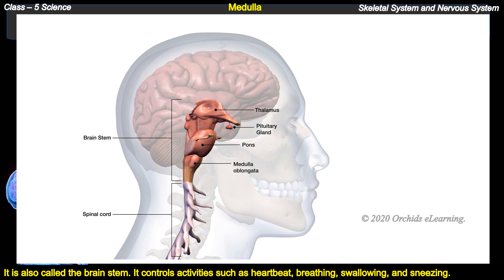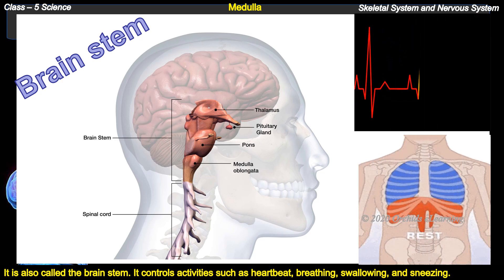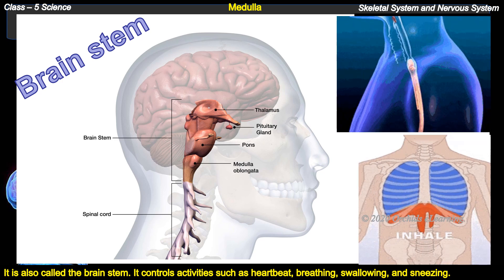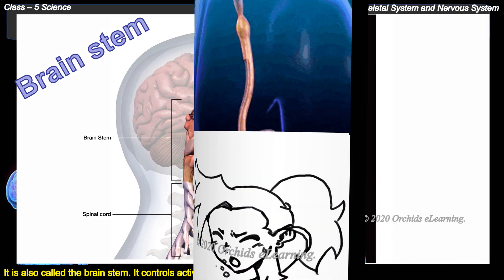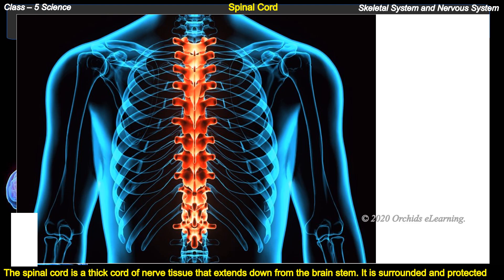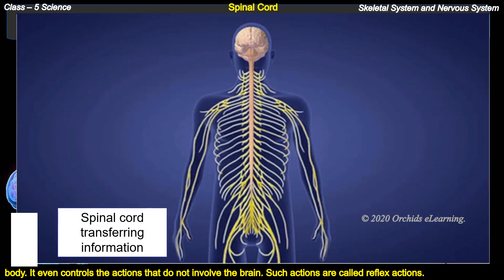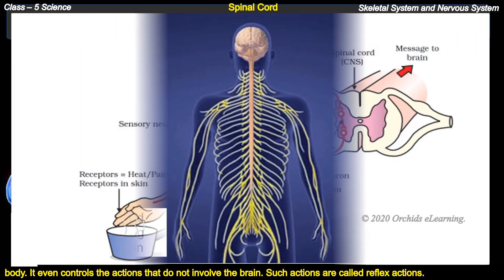Medulla, also called the brain stem, controls activities such as heartbeat, breathing, swallowing, and sneezing. The spinal cord is a thick cord of nerve tissue that extends down from the brain stem. It is surrounded and protected by the backbone. The spinal cord transfers information between the brain and the rest of the body. It also controls reflex actions — actions that do not involve the brain.